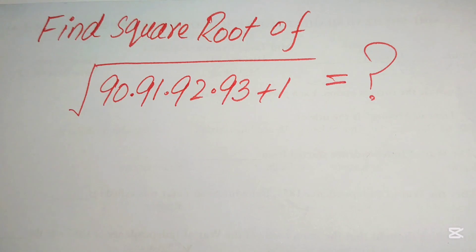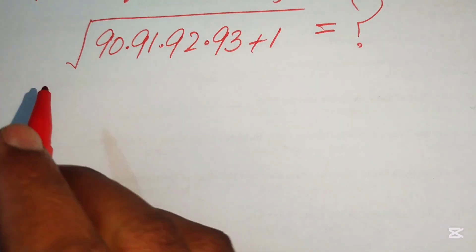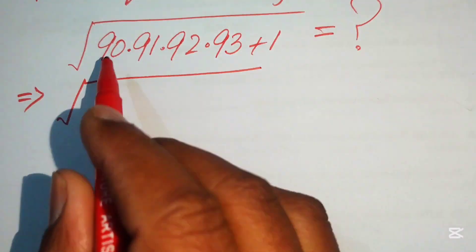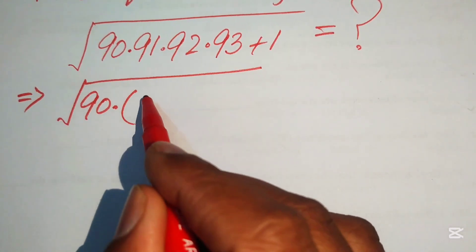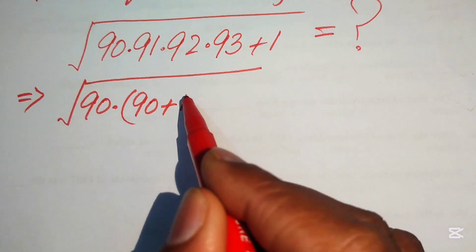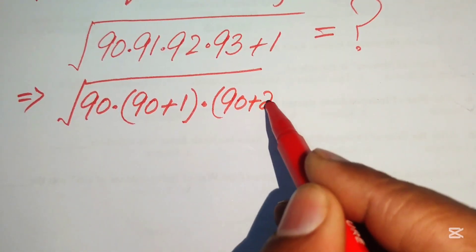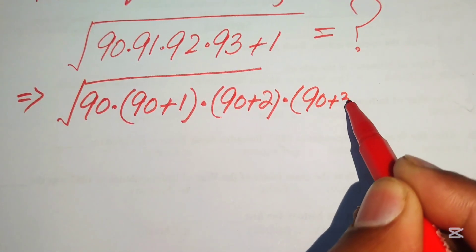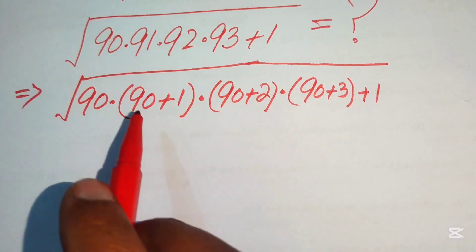The very first step we are going to do is rewrite this algebraic expression as the square root of 90 multiplied by 91, and we write 91 as 90+1, 92 as 90+2, and 93 as 90+3, plus 1. So we expand this term in this way, and you see each term involves 90.